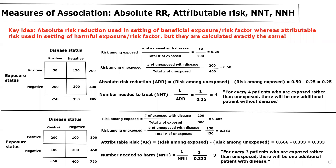Hi everyone, and welcome to the second Measures of Association lecture with a focus on absolute measures such as the absolute risk reduction, attributable risk, and how those are related to number needed to treat and number needed to harm. If you can only take one thing away from this lecture, it would be that absolute risk reduction and attributable risk are basically the exact same concept, the only difference being that absolute risk reduction is used in the setting of beneficial exposures or risk factors, whereas attributable risk is used in the setting of harmful exposures or risk factors. But they are basically the same exact concept, and it just changes a little bit of the math, as we'll demonstrate.